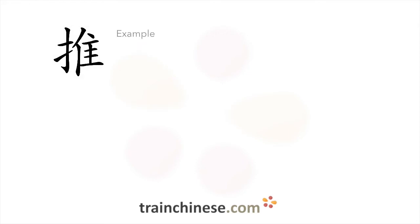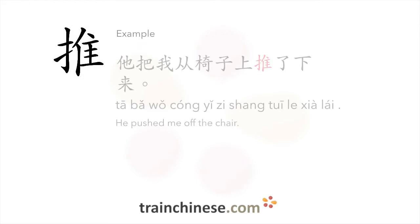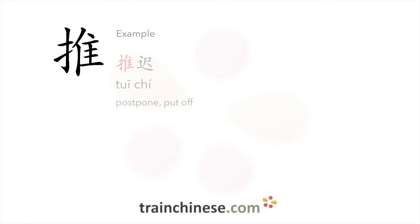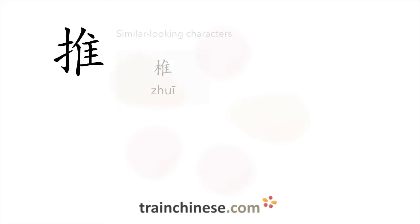Let's look at some examples. 他把我从椅子上推了下来。 推迟. Here are three similar-looking characters — pay attention to the differences.